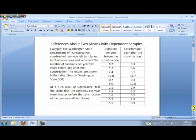And here's the question. At a 10% level of significance, test the claim that the collisions per year were greater before the construction of the two-way left-turn lanes.